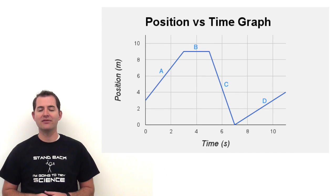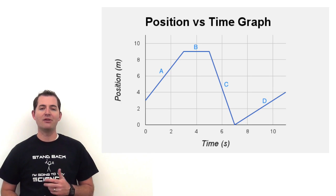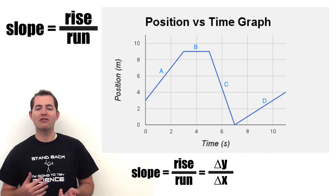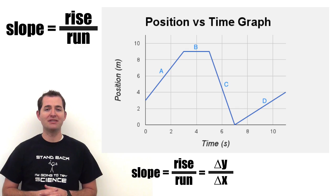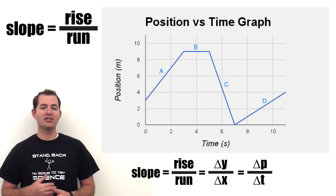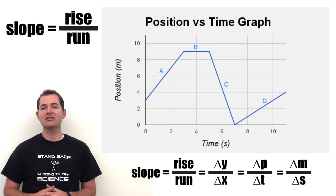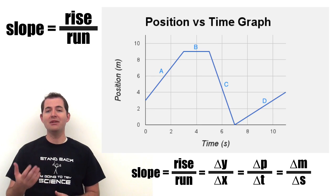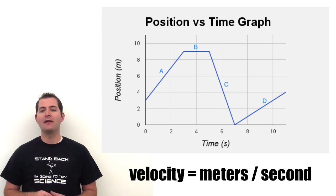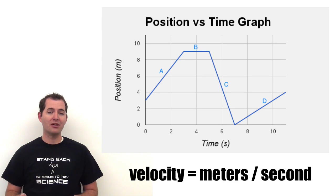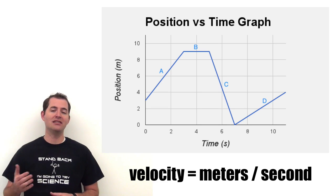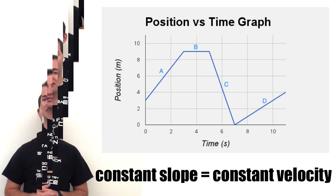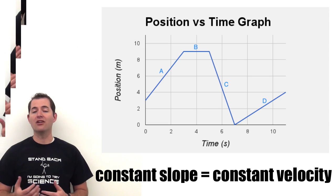One of the most important tools on a position versus time graph is the slope of the line. In section A, the slope is the rise over the run, or the change in y over the change in x. On a position versus time graph specifically, that's the change in position over the change in time — meters divided by seconds, which gives us units of meters per second. These are the units of velocity. If we have a constant slope, as in section A, we have a constant velocity.